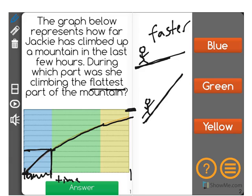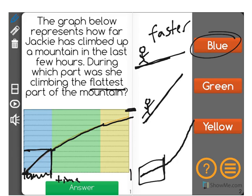My guess is the mountain looks somewhat like this, where it started off pretty flat, and then it got steeper and steeper until she was at the top. So this would be represented by the blue area. My guess is blue is the flattest part of the mountain.